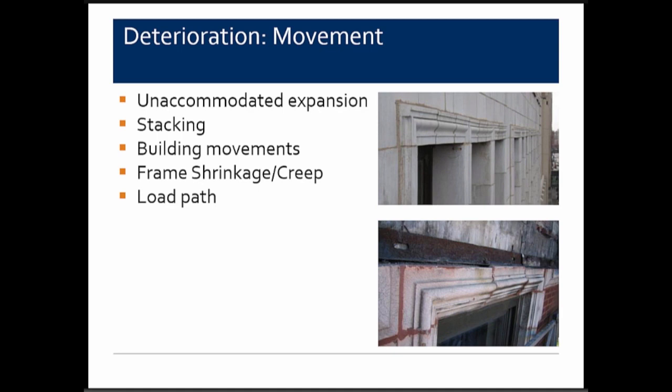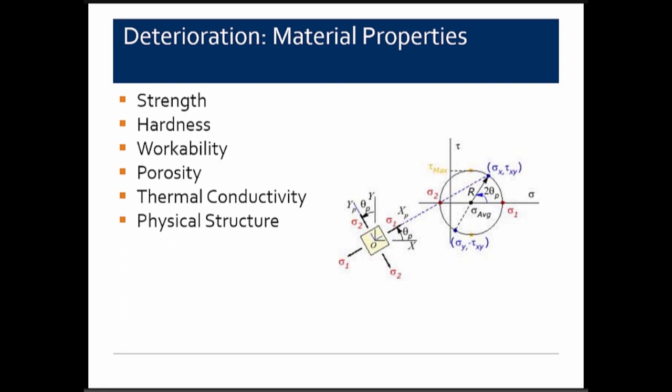Building movements can include shrinkage of a concrete frame — the concrete wants to shrink while the terracotta wants to grow, causing creep and differential movement. Depending on load paths around window openings, punches, water tables, and any change in elevation, you can get deterioration from those conditions as well.